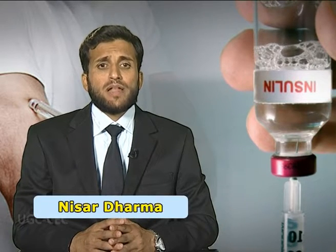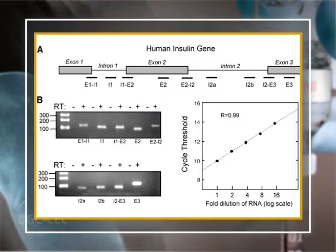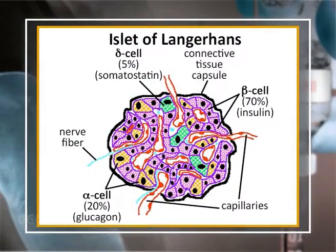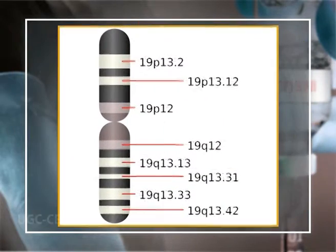The word insulin is derived from the Latin word 'insula' meaning island or islet. The insulin gene is located on chromosome 11. Insulin is a protein synthesized and secreted by the beta cells of the islets of Langerhans of the pancreas. The alpha cells of the islets secrete glucagon, and D cells produce somatostatin. The insulin receptor gene is located on chromosome 19.